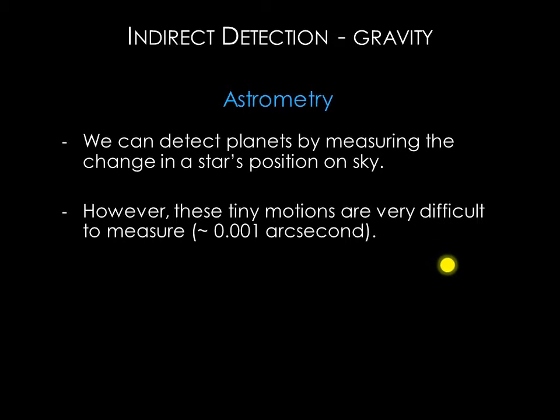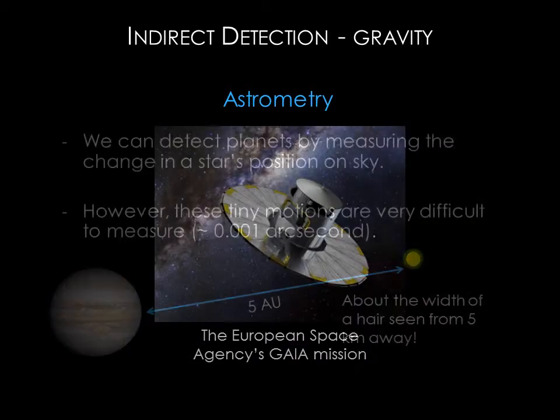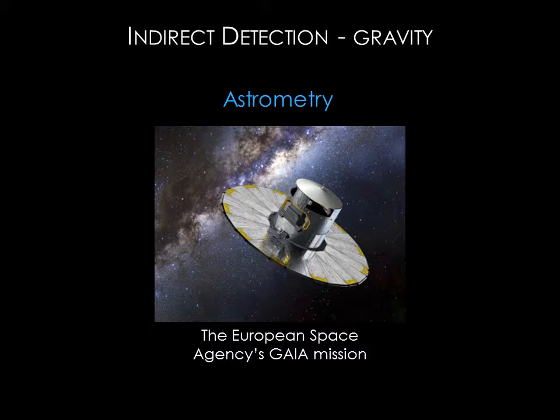Let's first consider astrometry. Measuring very tiny changes in a star's position is not easy. For example, a Jupiter-sized planet orbiting five astronomical units from a Sun-like star would cause its star to move only about 0.003 of an arc second — approximately the width of a hair as seen from five kilometers. It's very tiny, but it's not undoable. The Gaia mission from the European Space Agency has already launched and is in the testing and calibration phases. It will measure positions of a billion stars in our galaxy, some to an accuracy on the order of micro arc seconds.